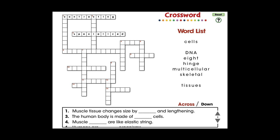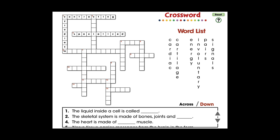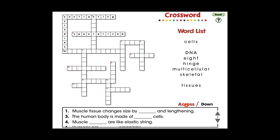Drag a word from the list to its correct position in the puzzle. Use the arrows to scroll through all the clues. Switch between across and down clues and words. Visit ccpinteractive.com for extended versions of our products and to watch more demo videos.